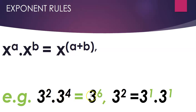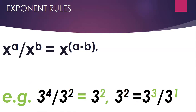As an example, when you have 3 squared times 3 to the power 4, the answer is 3 to the power 2 plus 4, which is 3 to the power 6. Because you have 3 multiplied by itself twice, times 3 multiplied by itself 4 times, which is nothing but 3 multiplied by itself 6 times. For instance, 3 squared can also be written as 3 to the power 1 times 3 to the power 1.